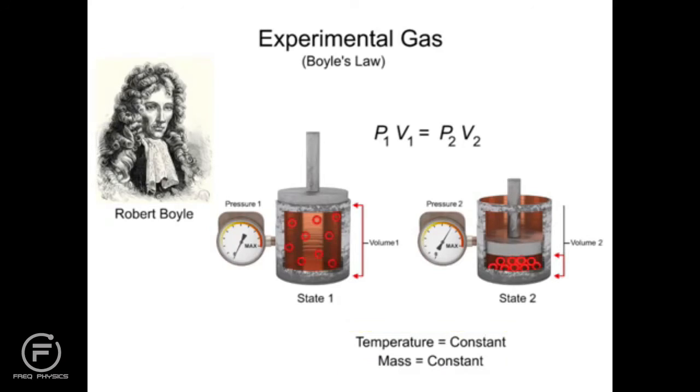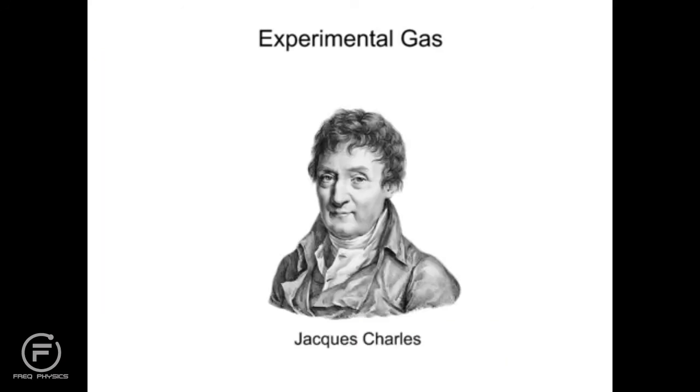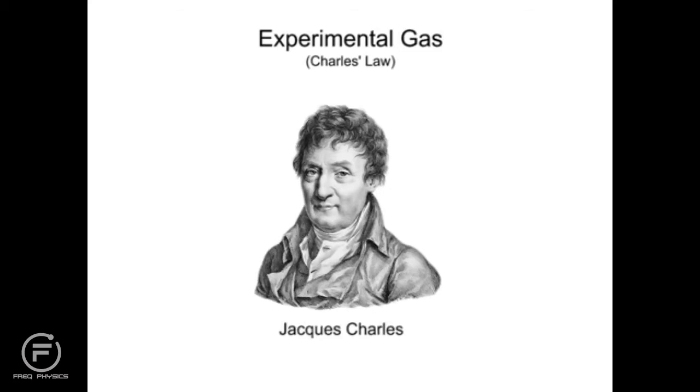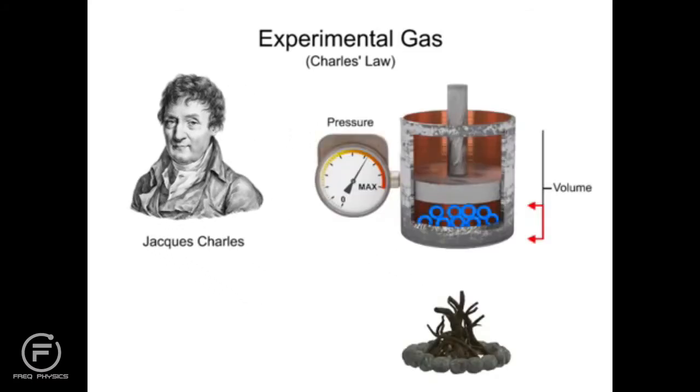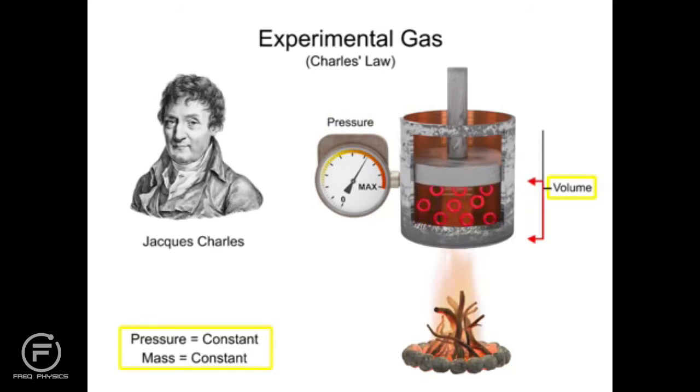In the late 1700s, Jacques Charles, a French scientist and mathematician, discovered an important rule regarding gases under pressure. Charles' Law, also known as the Law of Volumes, is an experimental gas law which describes how gases tend to expand when heated. It states that if the pressure of a gas is constant and its temperature is raised, the volume will also be raised by the same ratio.